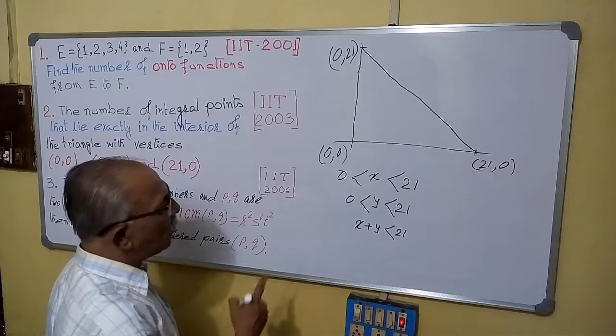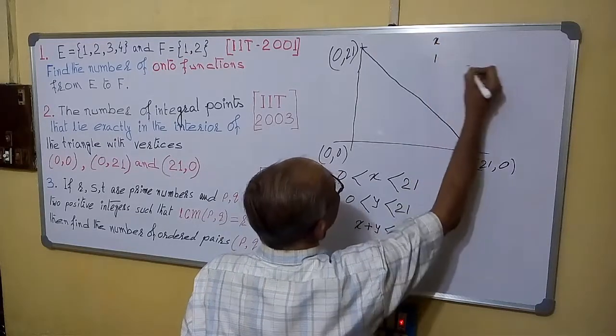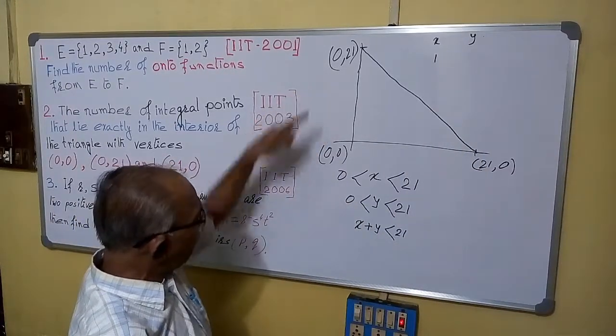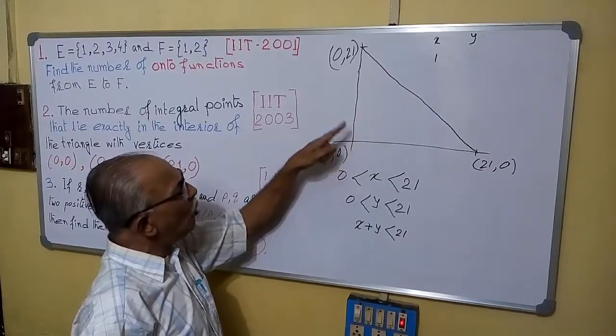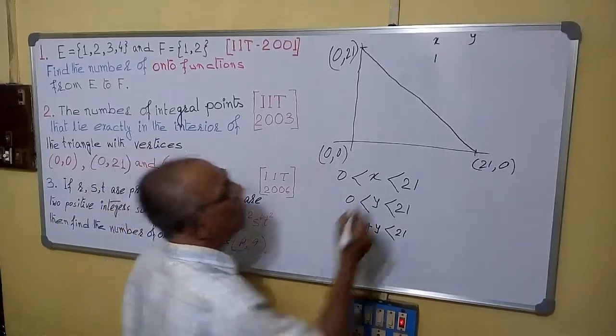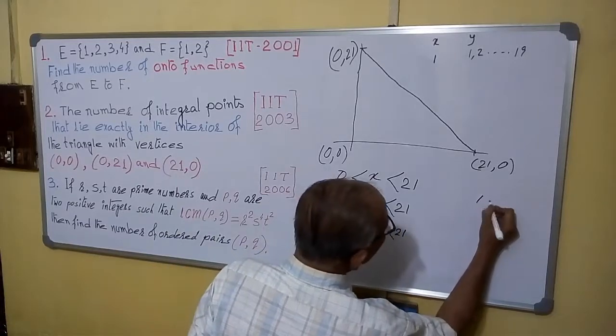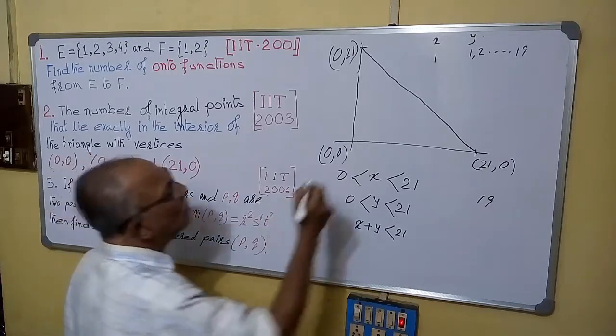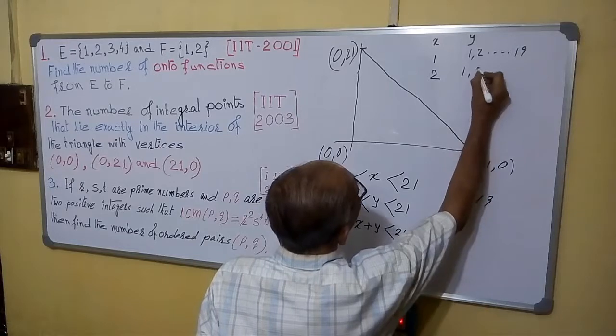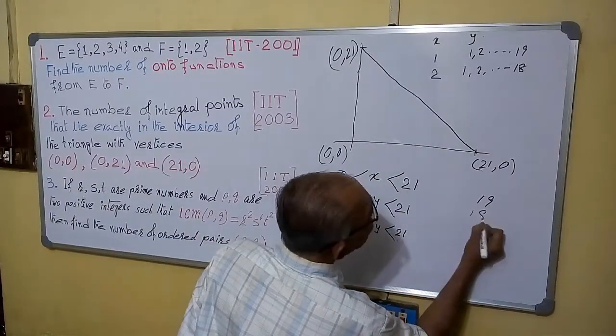Now, what are the possible values of x and y? See here, when x is 1, then x minimum value will be 1. So the y can have 1, 2, 3, 4, maximum up to 19. It can have any value from 1 to 19 such that it will be less than 21. It cannot be 20. So it can have any values from 1 to 19. That means, we can choose these points in 19 ways. Again, x can have 2 values. When x is 2, then y can be again 1, 2, up to 18. Because 2 plus 19 will be 21. So now, these points we can choose in 18 ways.